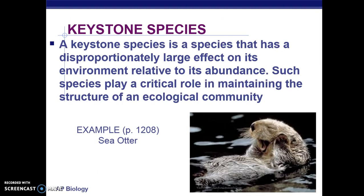The last thing we need to discuss is an example of a keystone species in a community. A keystone species is an organism that isn't necessarily the most abundant, but plays the most important role in maintaining the stability of the community. The most classic example of a keystone species is the sea otter.